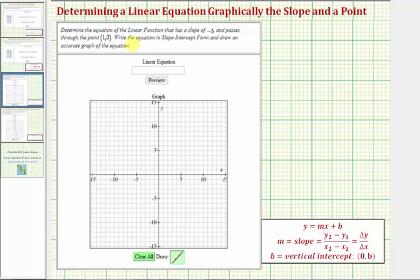In this question, we're asked to determine the equation of the linear function that has a slope of negative five and passes through the point (1, 3). We want to write the equation in slope-intercept form and draw an accurate graph of the equation.